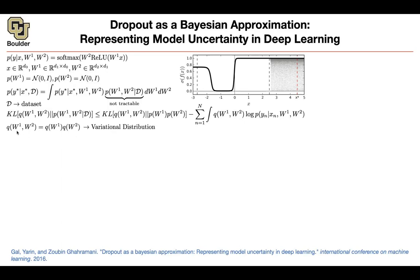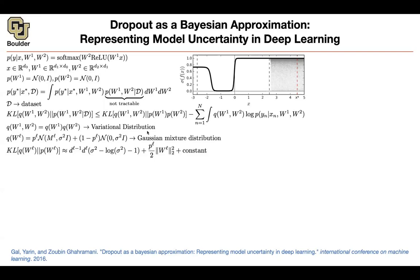Now you can start making assumptions about Q. The first assumption is that layers are independent — this layer is independent from the other. You can further assume W1 and W2 follow Gaussian mixture distributions: a mixture of two normals, one with mean 0 and one with mean M_L, with associated probabilities. You can then write down the KL divergence between Q(W1) and P(W1), and between Q(W2) and P(W2). This term depends on the dimensions of your hidden space, sigma, p_L, and the norm of the W matrices, plus constant terms you can discard.